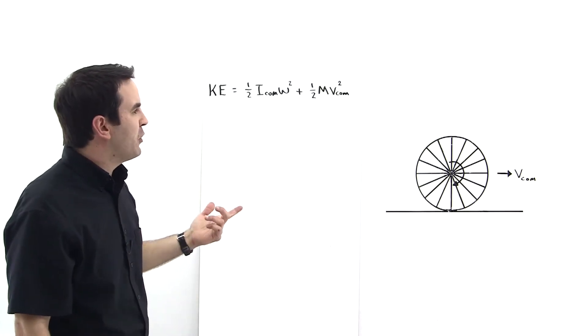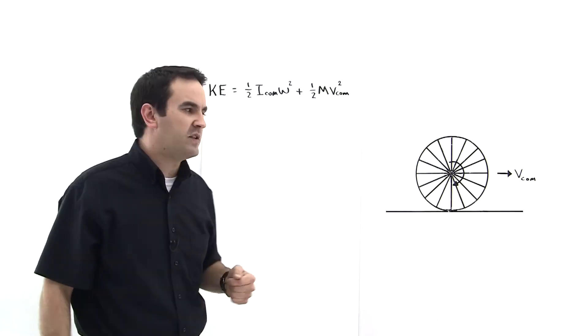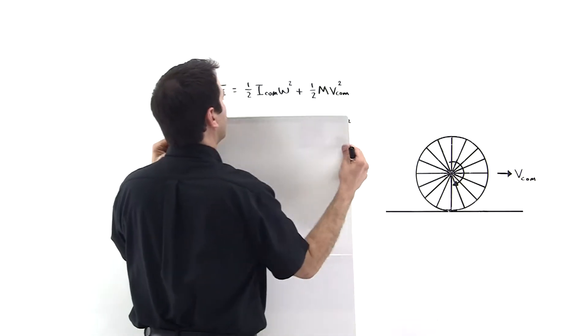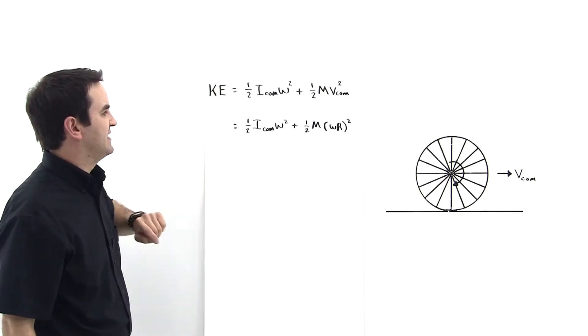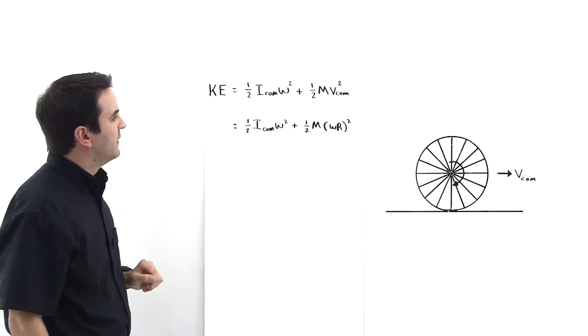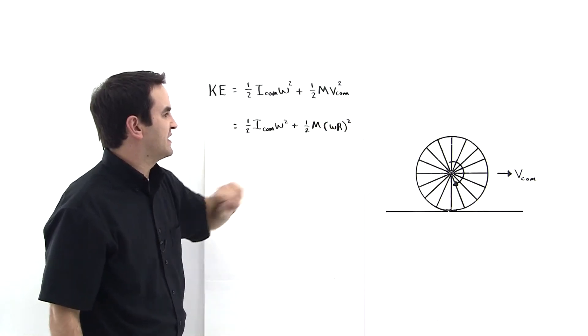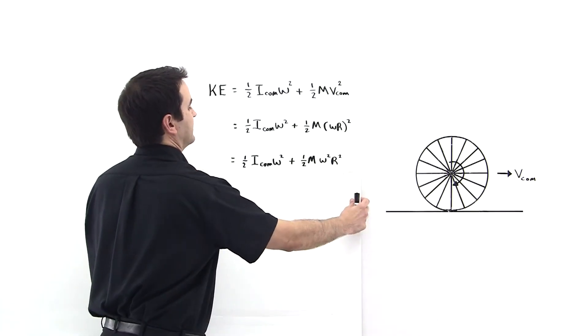But we remember from rolling motion that the velocity of the center of mass is equal to omega r where r is the radius of the wheel. So let's make that substitution. This term comes down as is and we've just replaced v center of mass with this omega r. Let's just square everything inside here, so it's omega squared r squared.